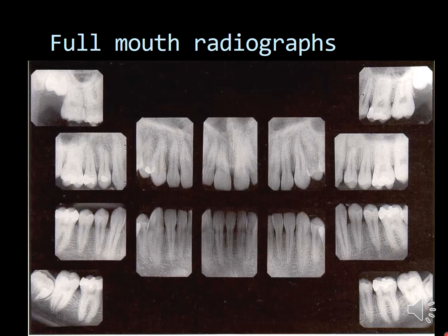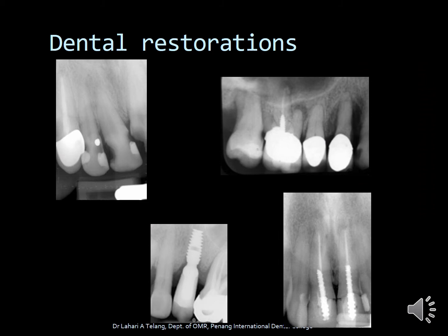That brings us to the end of all the maxillary and mandibular landmarks. When viewing full-mouth radiographs, you will be able to identify each landmark — though not all landmarks will be visible on every radiograph, the majority will be. When interpreting radiographs, it's important to understand that restorations cast different shadows. They are denser because of metal content, or less dense if made of composite. This radiograph shows a root canal treated tooth with a metal or PFM crown. You can also see implants and posts with root canal treatment.